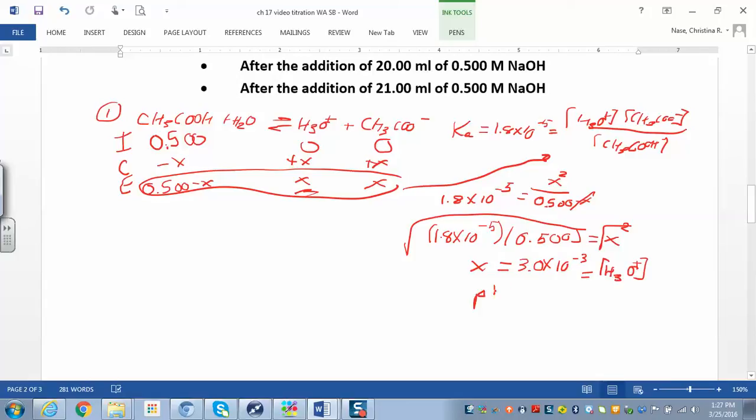And then to calculate pH after that, we have pH equals negative log of 3 times 10 to the negative 3. So when we work out the pH, what do we get for pH? About 2.52. So it's still very acidic. Alright, so that's part A. That's just a regular weak acid ICE table problem.